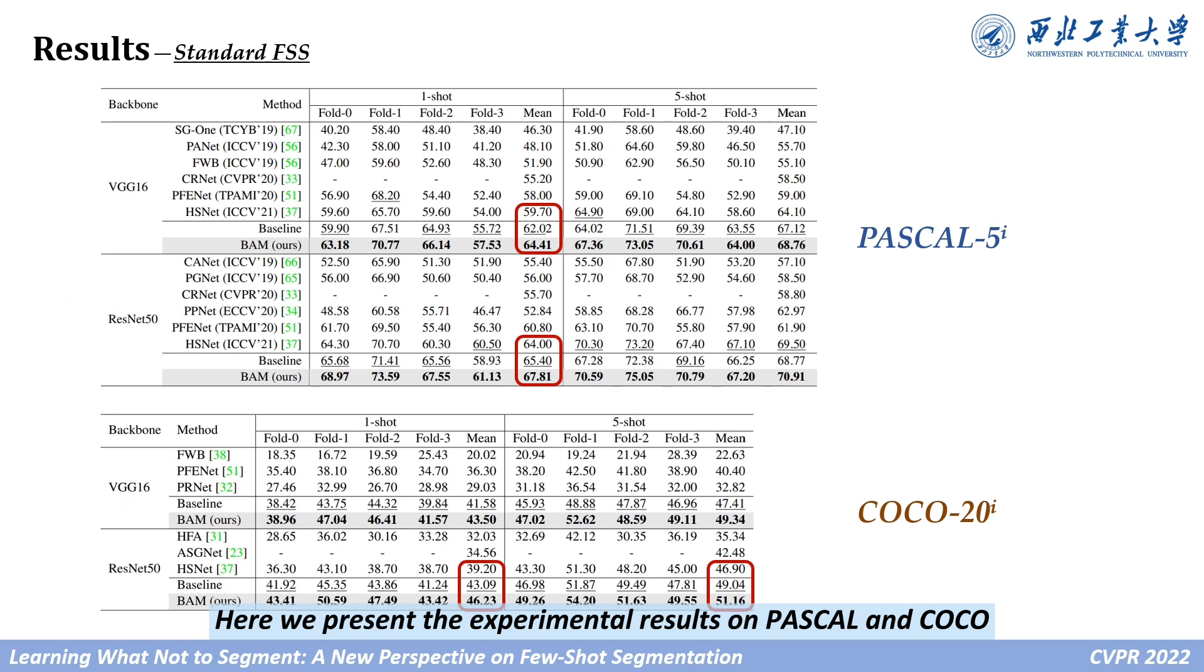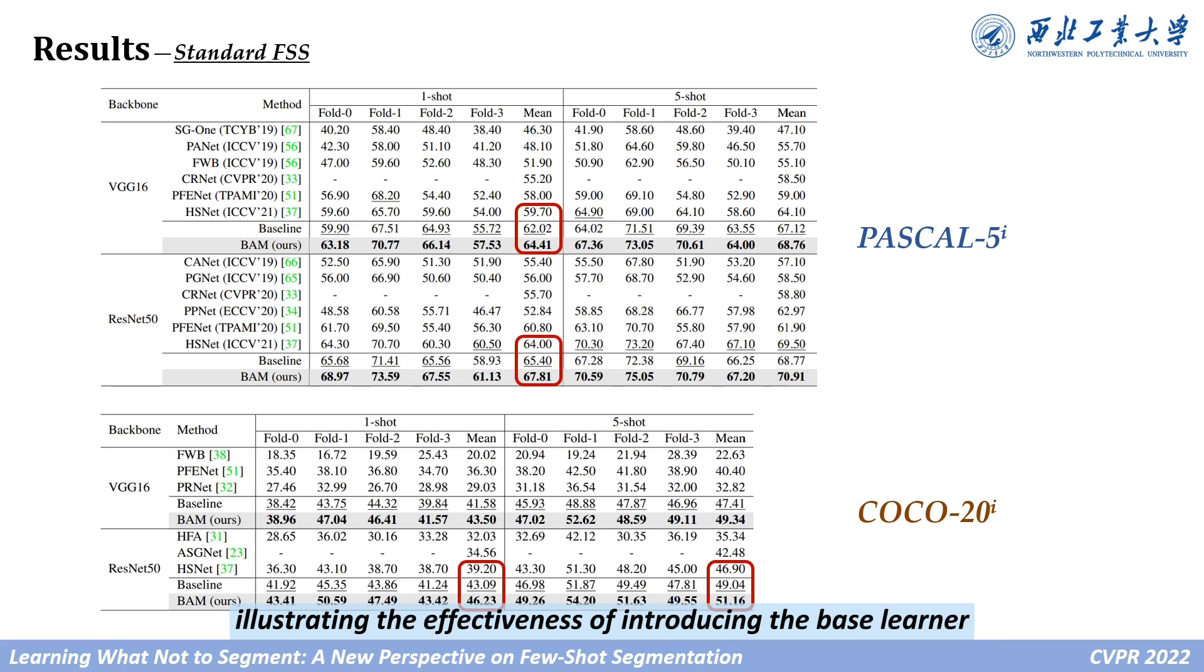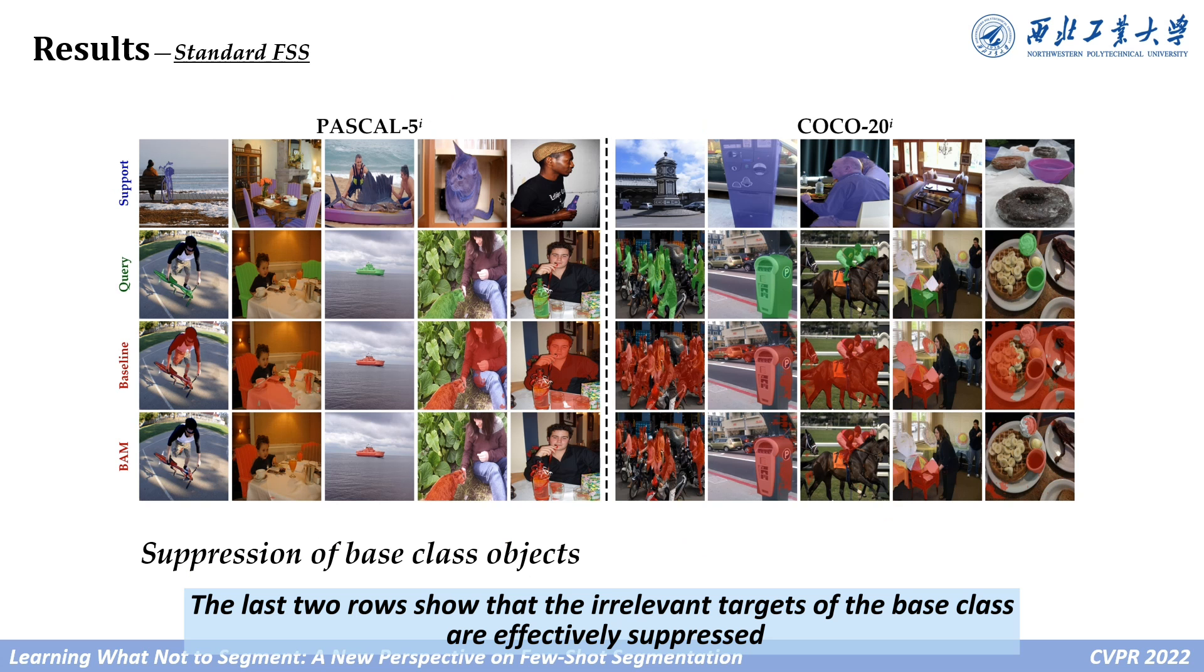Here we present the experimental results on Pascal and COCO. It can be found that our method outperforms the SOTA HSNet and baseline approach by a considerable margin, illustrating the effectiveness of introducing the base learner. The last two rows show the irrelevant targets of the base class are effectively suppressed,